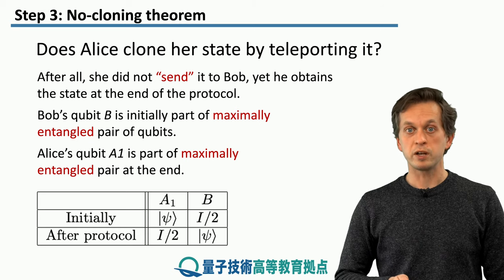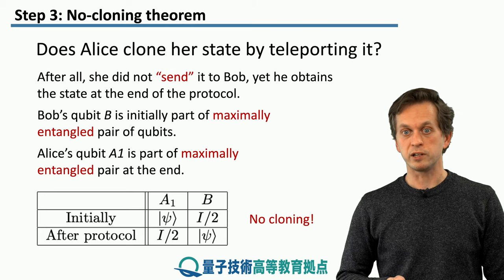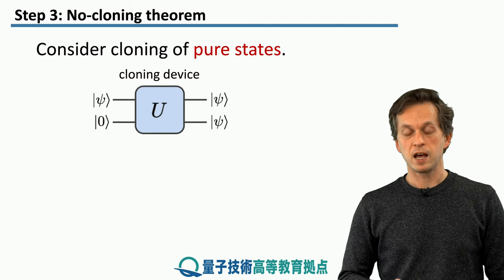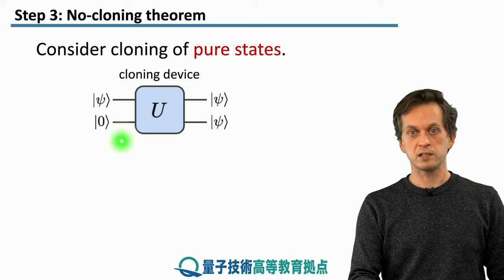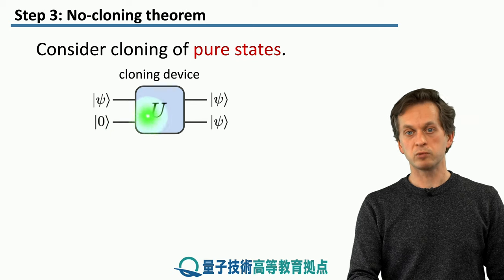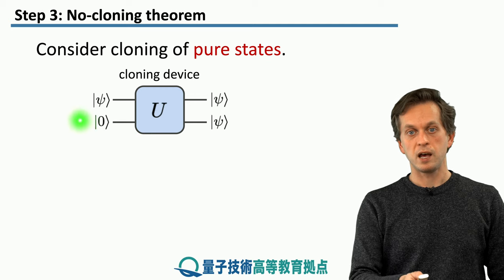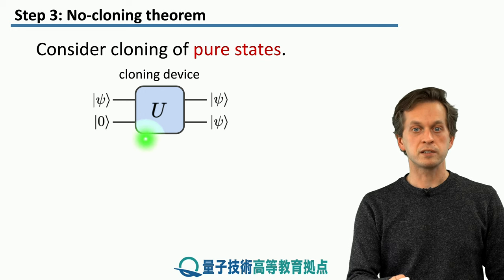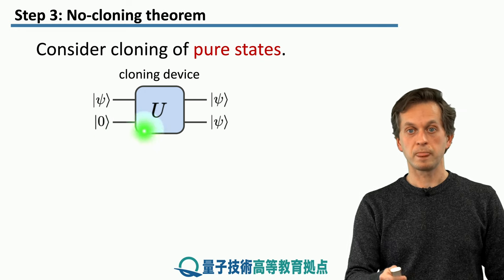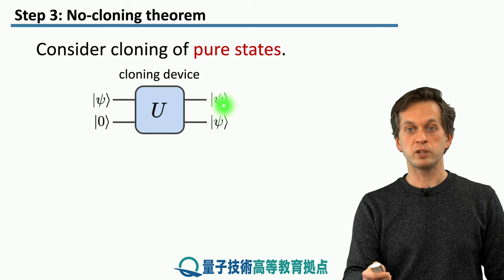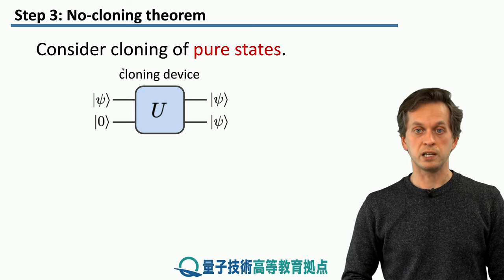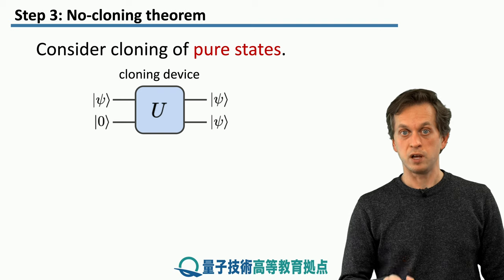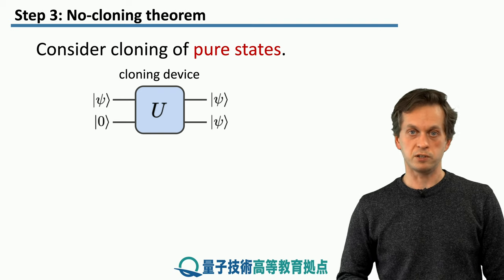But this is an interesting question: is cloning possible? Let's only consider cloning of pure states. We've got some hypothetical cloning device — some unitary — where the input state is some arbitrary state psi with some other state initialized in state 0. It's a two-qubit input state and we've got a two-qubit output state where both qubits are now in the state psi. The question we are trying to answer: is such a transformation possible, and what does the unitary look like that can achieve it?